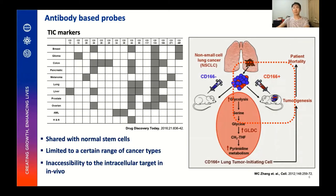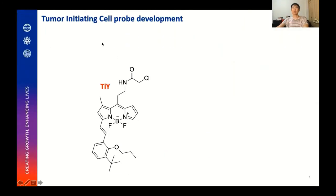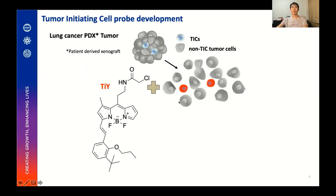There are several intracellular markers for TICs specifically, but antibodies have a limitation in targeting intracellular markers — they are inaccessible in live cells. To overcome these antibody limitations, I developed a small molecule fluorescent probe for TICs by screening a fluorescent compound library. This is the chemical structure of the probe I developed. This compound selectively brightens some of the tumor cells harvested from lung cancer-derived xenograft tumors in live status.